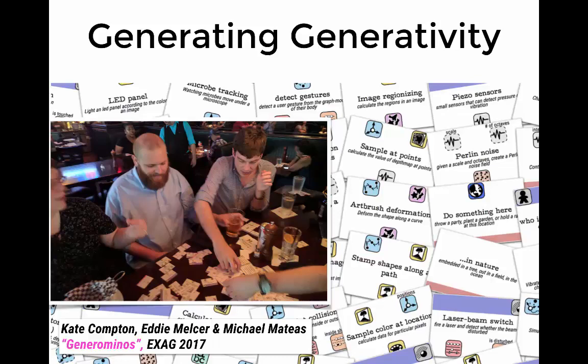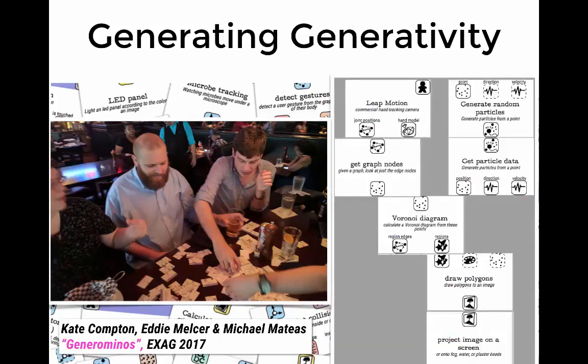It's a pencil and paper activity, or rather it's a deck of cards, a physical deck of cards, that are called generominos. You can read more about them in the paper listed at the bottom. But what they are is it's a set of cards that each card is a transformation of data. So it takes some data from the top and transforms it into the type of data that's down below. And you can use these to build complicated branching pipelines.